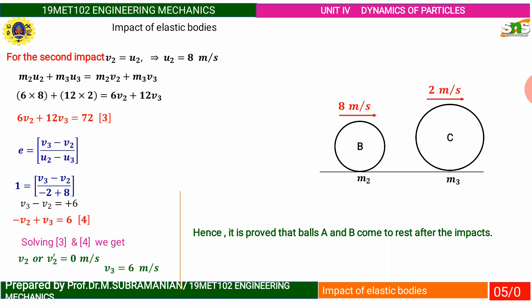The same, E equals 1. So E equation is V3 minus V2 over U2 minus U3, which gives V3 minus V2 equals 6. From the third and fourth equations, solving, we get V2 equals 0 meters per second. V3 is 6 meters per second.